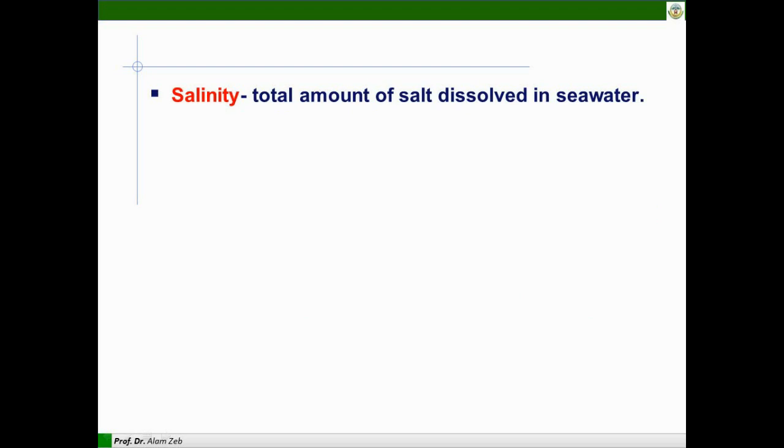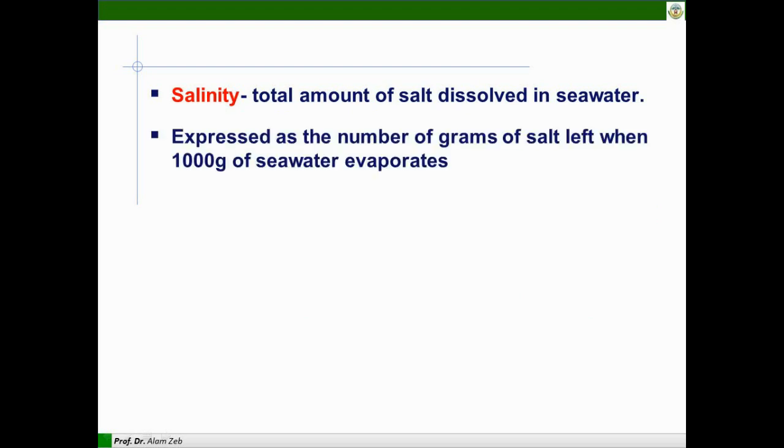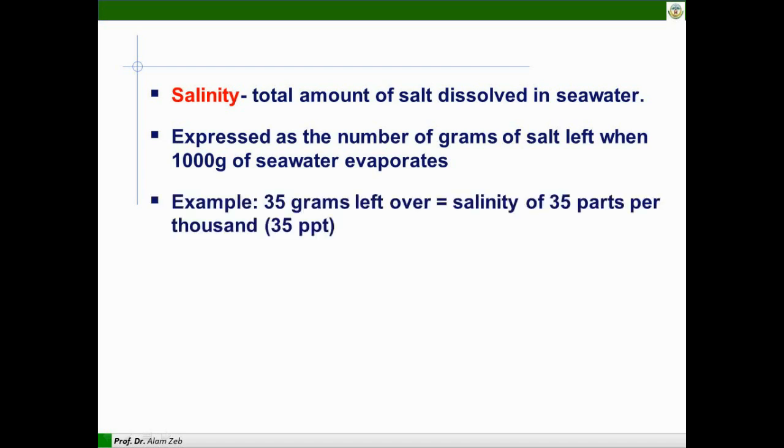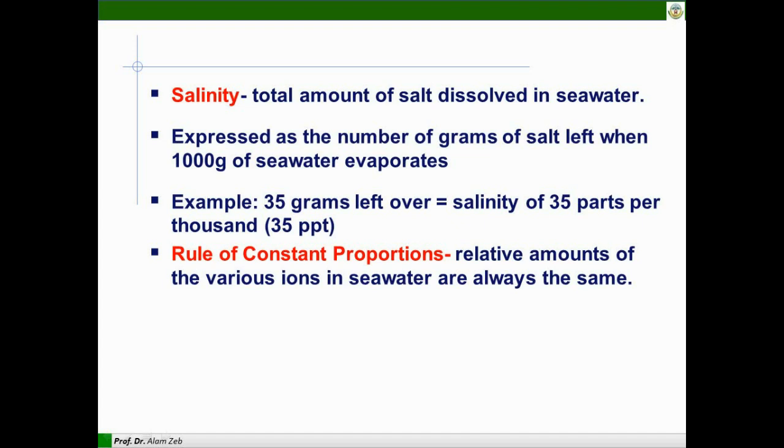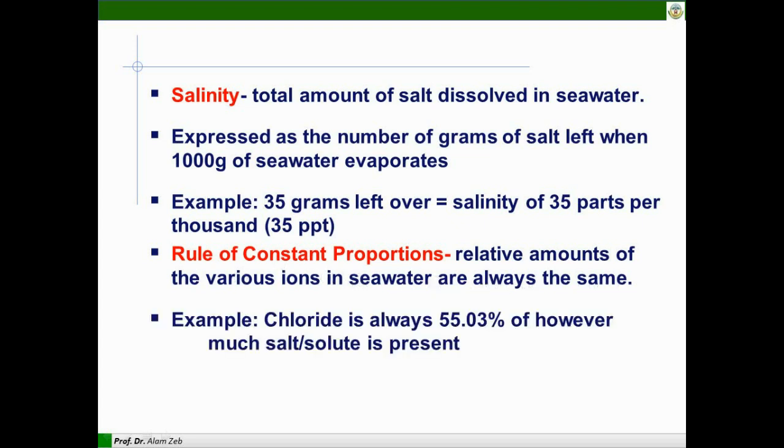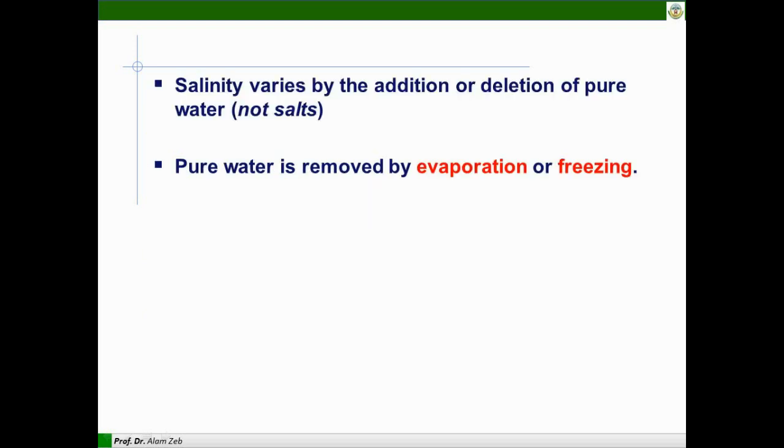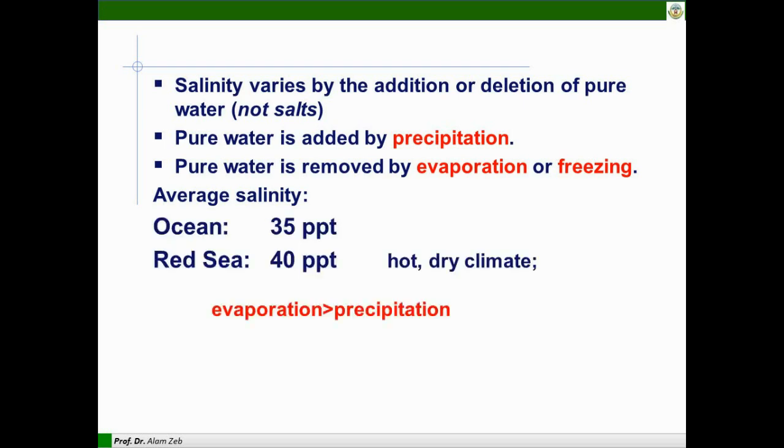Salinity is the total amount of salt dissolved in seawater. It is expressed as the number of grams of salt left when one kilogram of seawater evaporates. For example, 35 grams left over is equal to salinity of 35 parts per thousand (ppt). The rule of constant proportion applies here, which is the relative amount of various ions in seawater are always the same. For example, chloride is always 55% of however much salt is present. Salinity varies by the addition or deletion of pure water. Pure water is added by precipitation. Pure water is removed by evaporation or freezing. The average daily salinity of the ocean is 35 ppt.